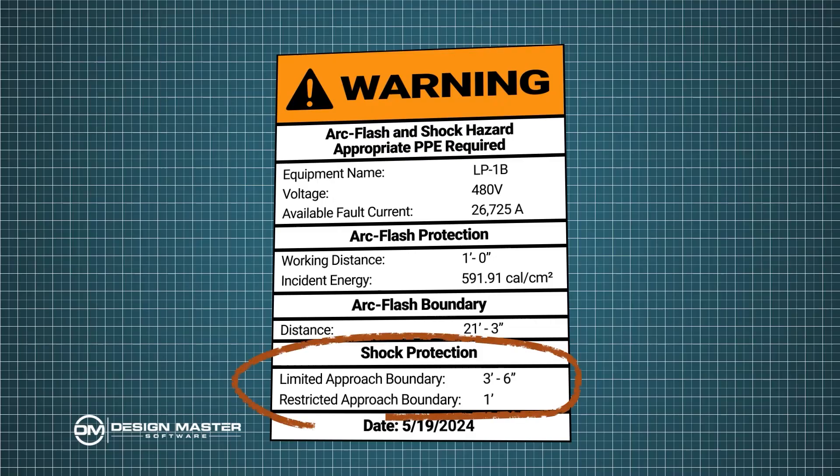There's also a shock warning lookup table that is generally included on arc flash labels. It's included in NFPA 70E and is a pretty straightforward lookup table, so those values are included on these labels as well.